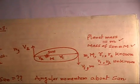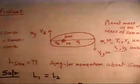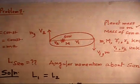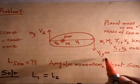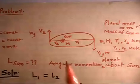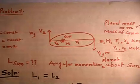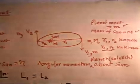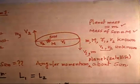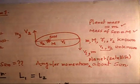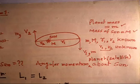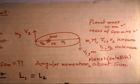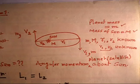What is given: mass of planet m, mass of Sun M, r1 and r2 are given. v1 and v2 are unknown — you have to find them, along with the angular momentum of the planet about the Sun. Angular momentum conservation and energy conservation will be sufficient for this problem. Take two to three minutes and try the problem, then we will discuss the solution.